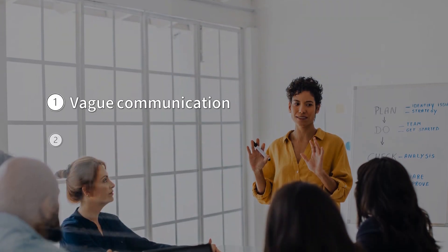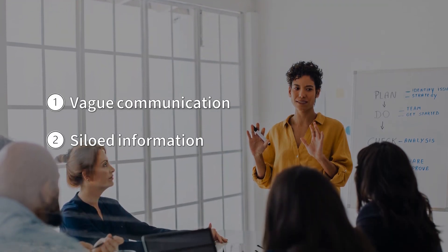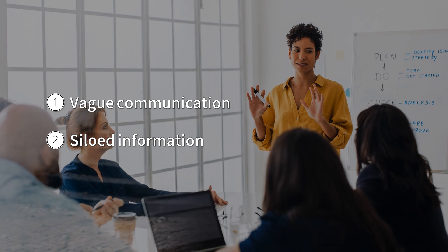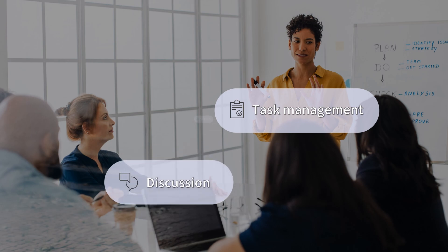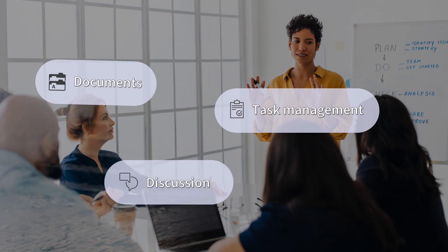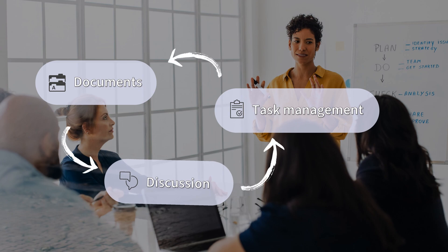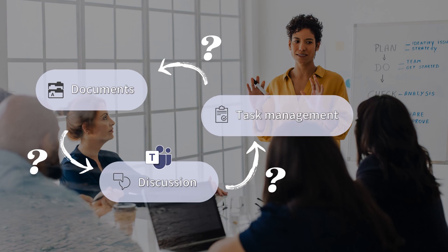Vague communication and siloed information cause most avoidable delays in projects. Projects are fragmented in different platforms — documents are in one platform while different versions circle around in others. Discussion happens in its own system, and task management is completely separated from these as well. These three silos are not integrated properly.